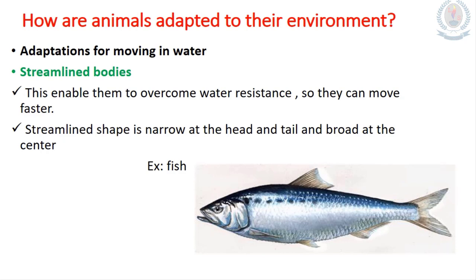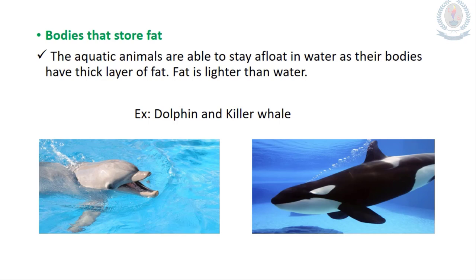How are animals adapted to their environment? Animals living in water have several special adaptations, such as streamlined bodies. This enables them to overcome water resistance so they can move faster. The streamlined shape is narrow at the head and tail and broad at the center — the best example is fish.